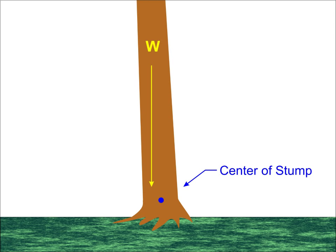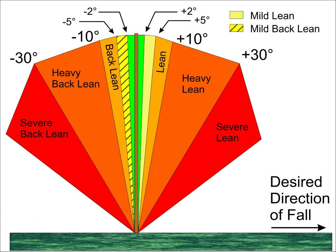While there are no established ranges for the classifications, this illustration shows nomenclatures for leans along the line of the desired direction of fall. Depending on the amount of lean, some very different techniques may need to be used for felling.